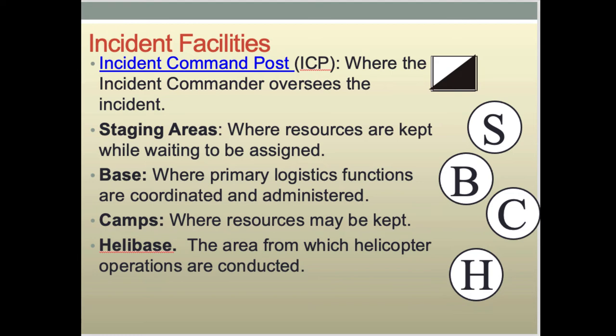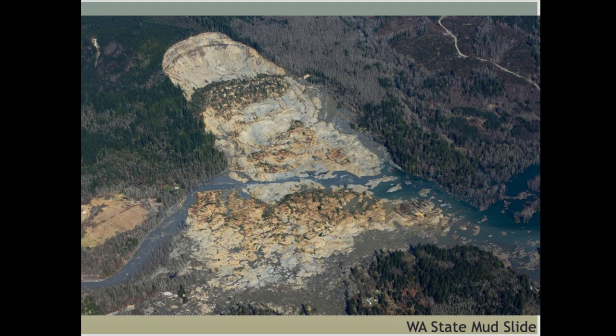Different types of locations are marked with consistent symbols. The Incident Command Post has the half-black and half-white flag. Staging areas are where things are kept. Bases are where you're coordinating people's functions. Camps are where either people or resources are. The helibase is marked with an H. We're just trying to use things that are very consistent. Another disaster that would have used the Incident Command System is the Washington State mudslides.